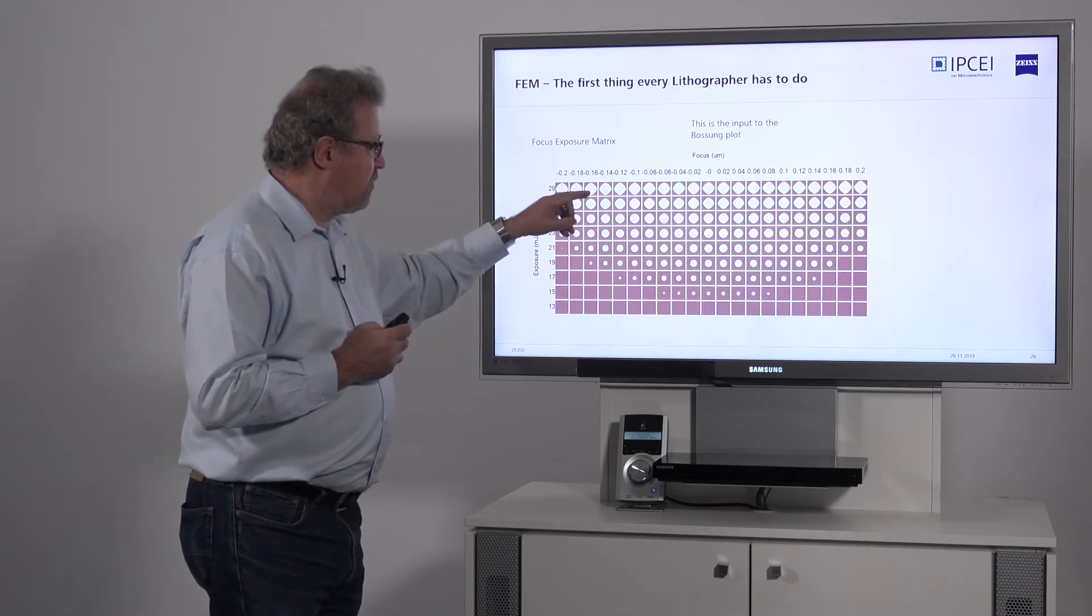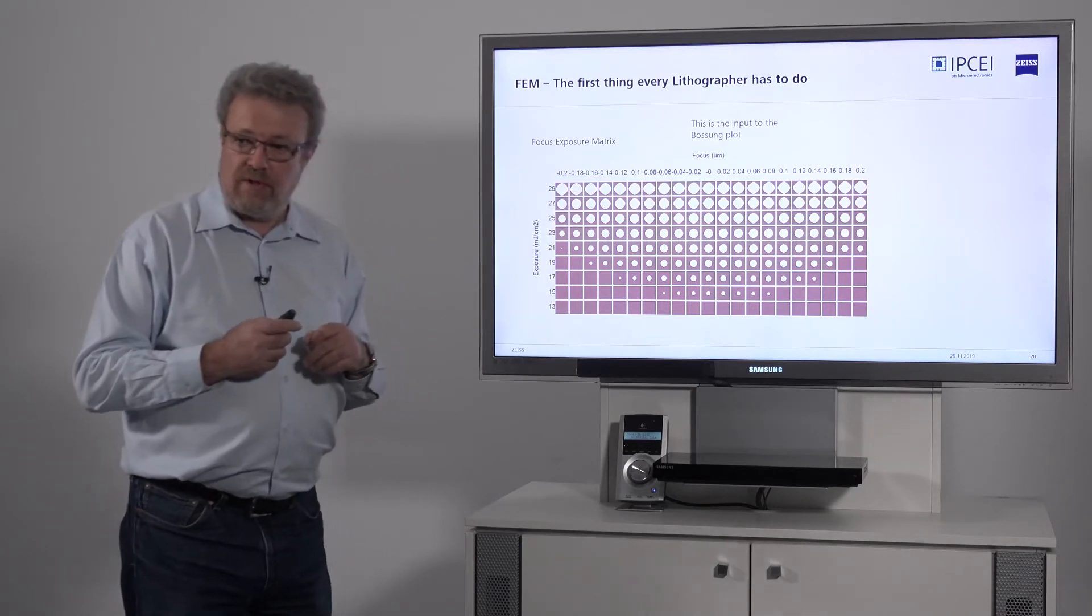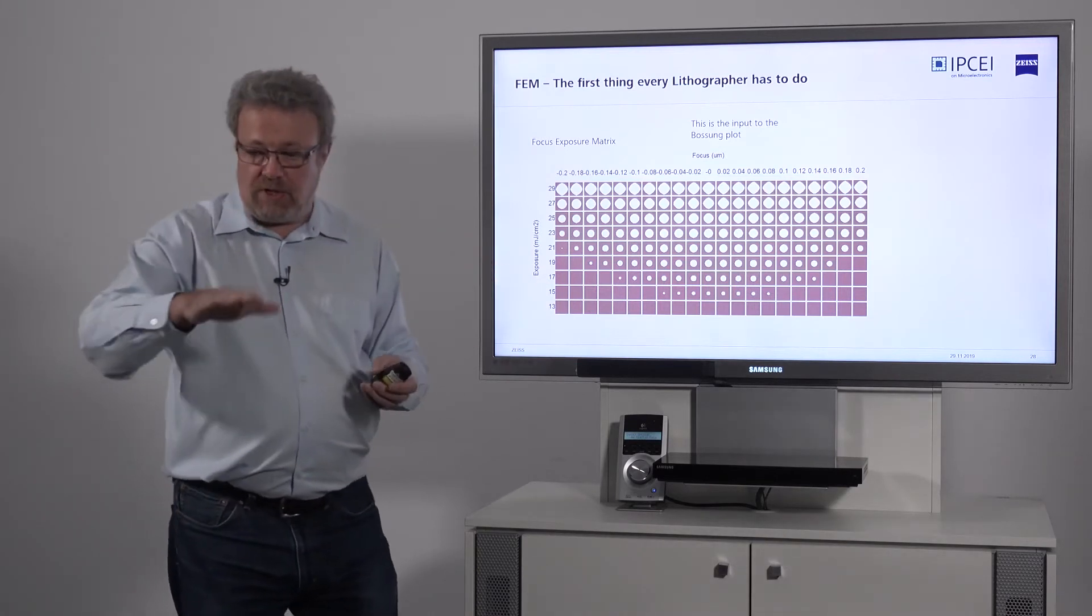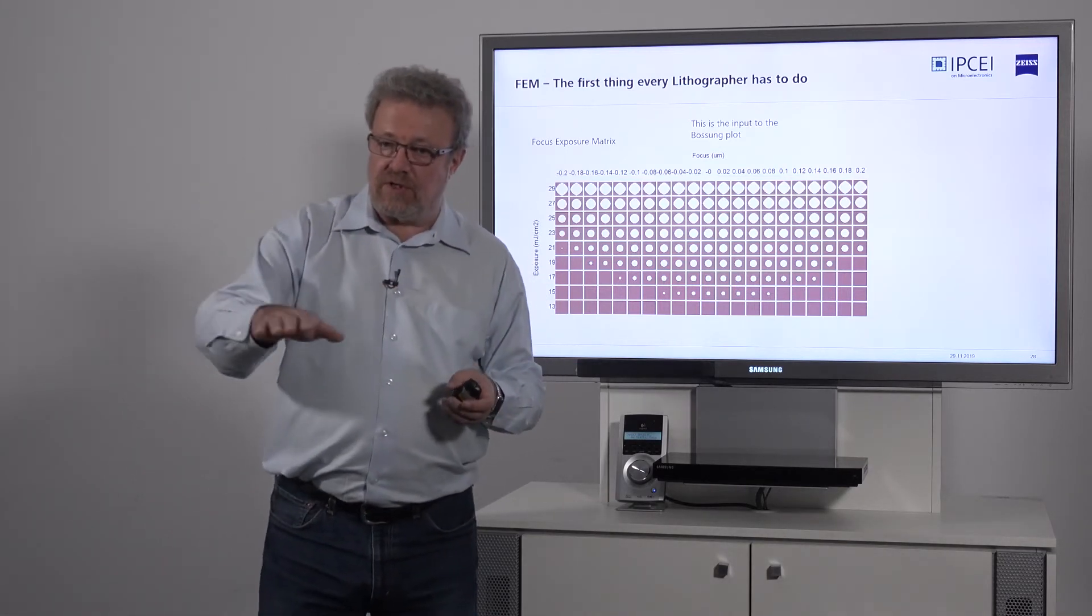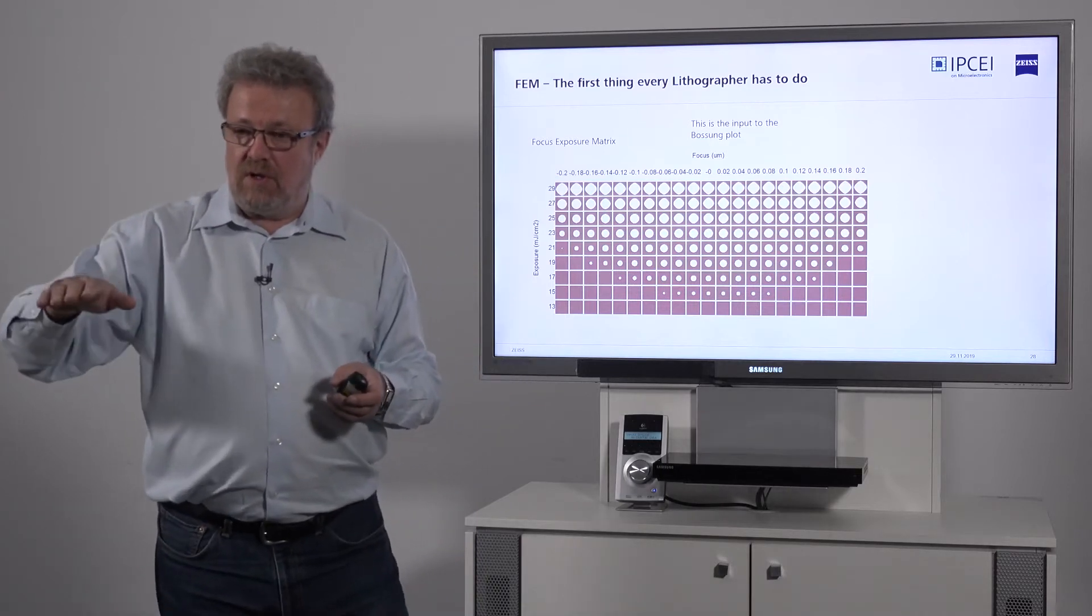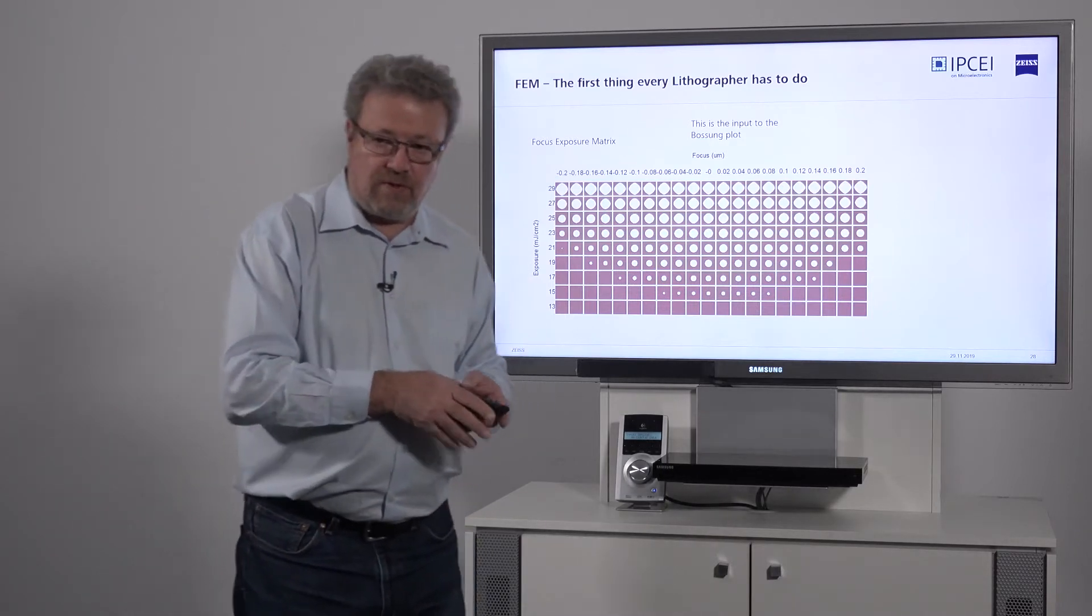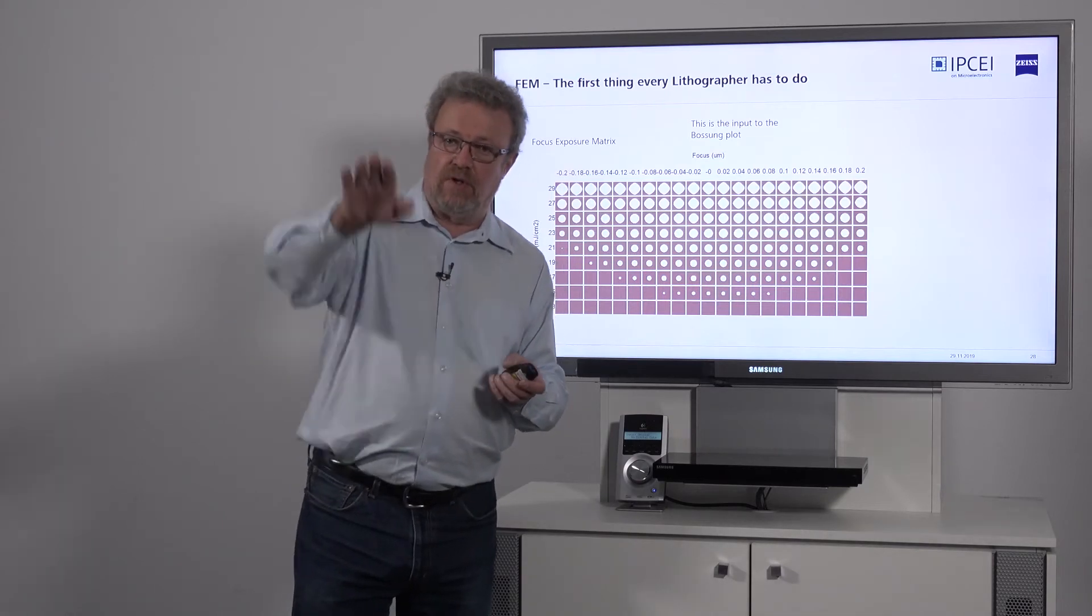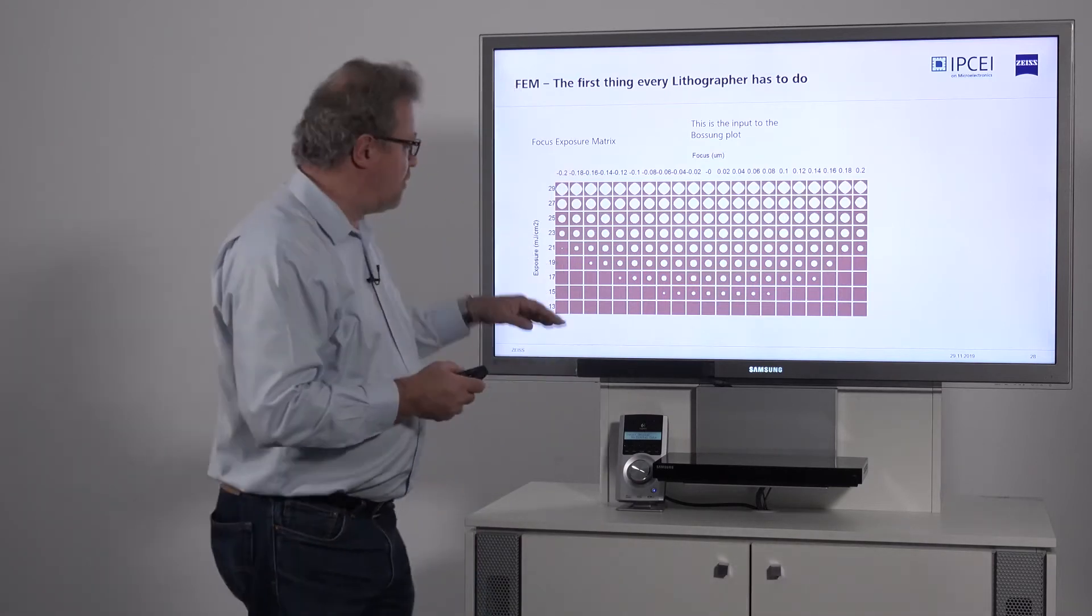As an example here, we print holes. What you do on the wafer is you expose many different fields, each of which has a different focus and a different dose. Typically, the rows are the focus steps and the columns are the dose steps.